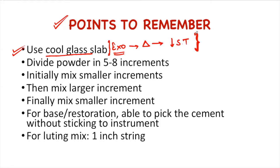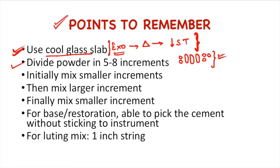This release of heat causes acceleration of the reaction, which decreases the setting time of zinc phosphate cement. So one method to control the setting time is to use a cool glass slab. We take the powder and divide it into five to eight increments, where the initial increments are smaller in size, the middle increments are bigger, and then again smaller increments. Now what is the reason behind the different sizes?